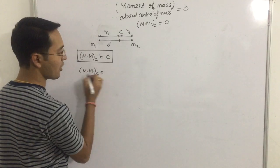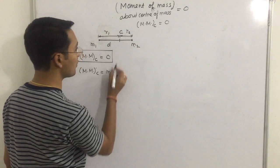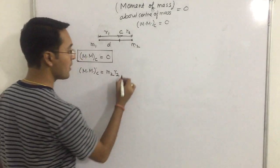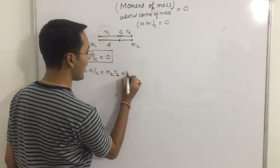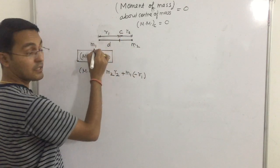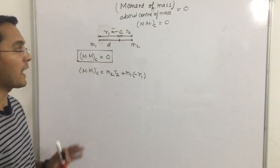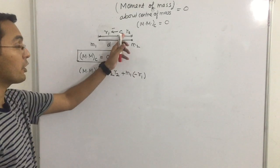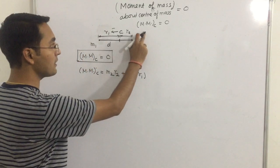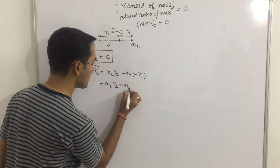Now, what is the moment of mass about center of mass? Mass into distance. This mass is M2 into the center of mass distance R2. So it is M2 R2 minus M1 R1.